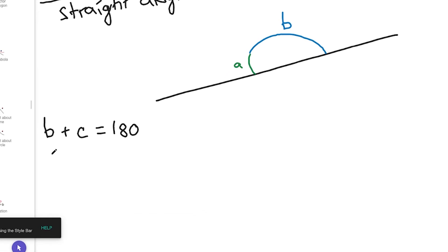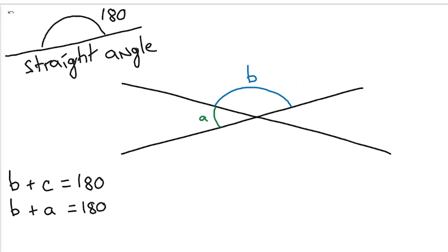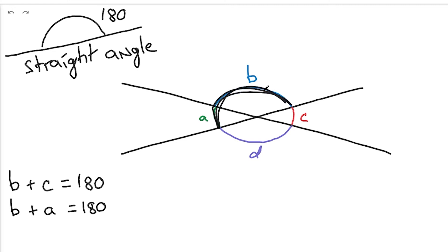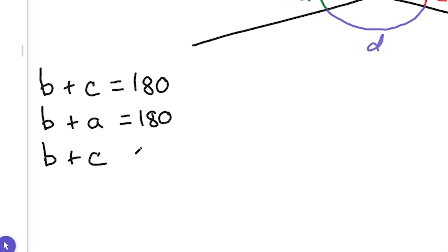Let's write that down. We have angle B and angle C summing to 180 degrees, and we have angle B and angle A summing to 180 degrees. Now let's consider our whole figure again. We've realized that the sum of angles B and C, and also the sum of angles B and A, both equal the same thing: 180 degrees. So B plus C equals 180, and B plus A equals 180. When two expressions are both equal to the same thing, those expressions are equal to each other.